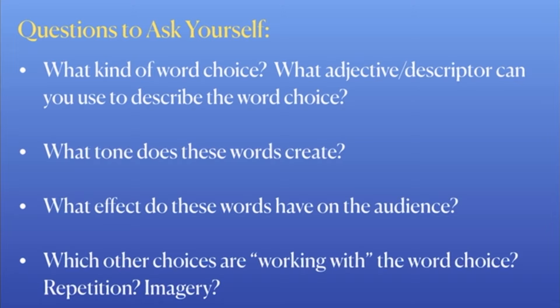Here are some questions you can ask yourself as you are analyzing the author's use of language. First, you want to determine what kind of word choice it is — think of an adjective or descriptor you could put in front of the word 'diction' to make it more specific. You also want to ask yourself what tone these words create, because word choice and tone work together; authors use a certain set of words to create a particular tone.